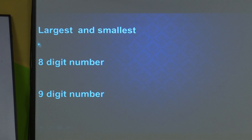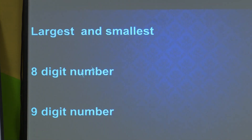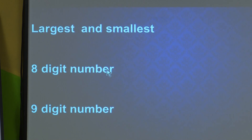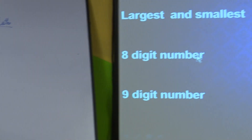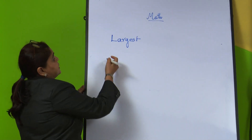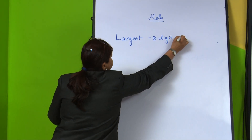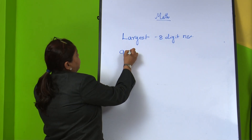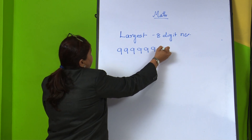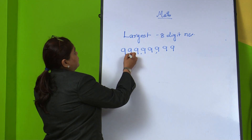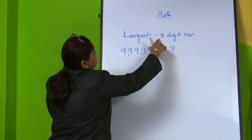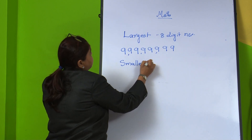Now, largest and smallest numbers. We had learned this in the previous class — the largest 8-digit number. The largest 8-digit number is when we write 9 eight times. Insert the comma after 3 digits from the right, then after 2 digits, then after 2 digits. This is the largest 8-digit number. Now we will see what is the smallest 8-digit number.